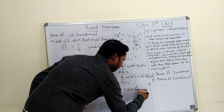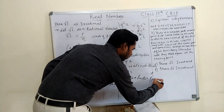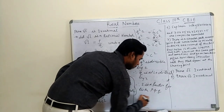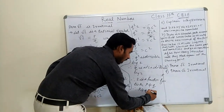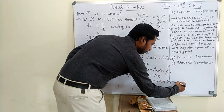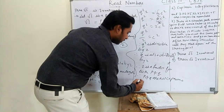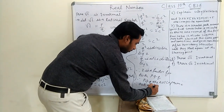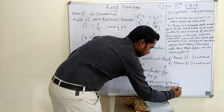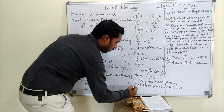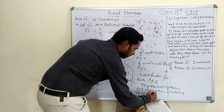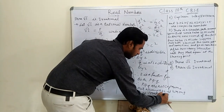Therefore 2 is a factor of both p and q. This means p and q are not co-prime. Therefore our assumption is wrong. Hence √2 is irrational.